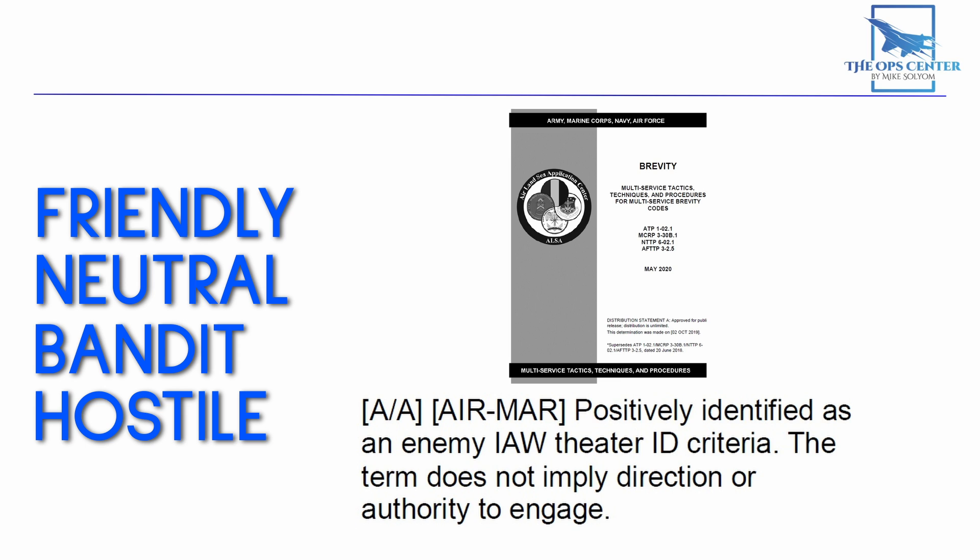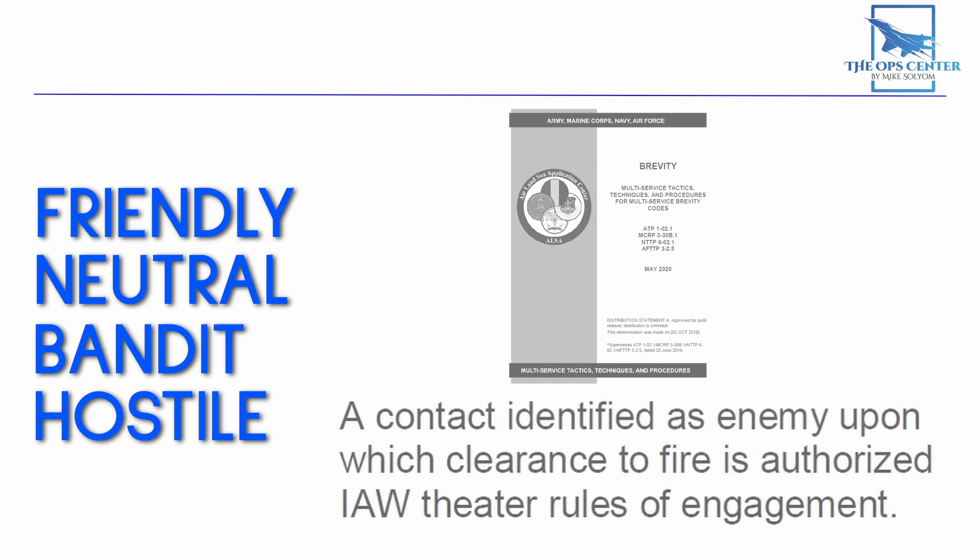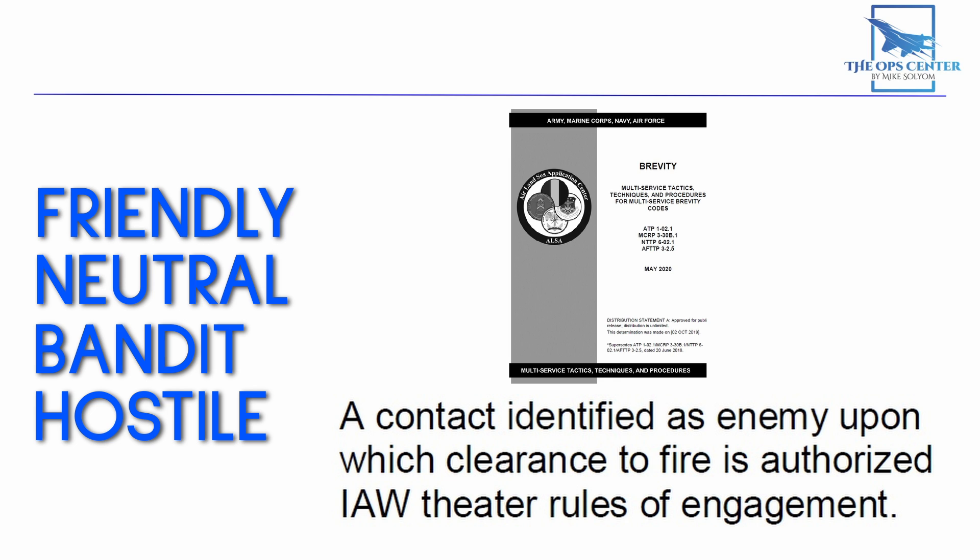This situation often arises when there is an adversarial relationship between nations, but neither side wants to start a war. There is still a need to categorize radar contacts, even when they won't be shot at. But we can use the ROE matrix to answer further questions that will turn this bandit into a hostile. A hostile is a contact identified as enemy upon which clearance to fire is authorized in accordance with theater rules of engagement.